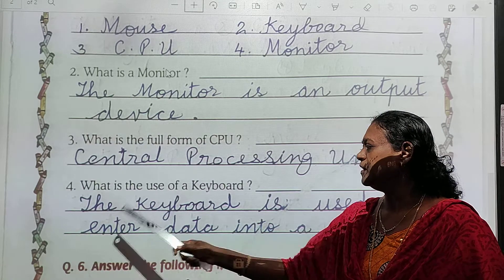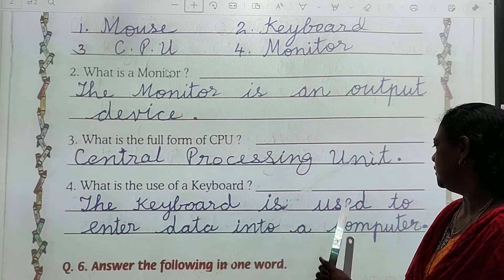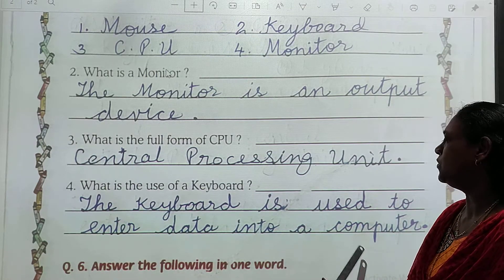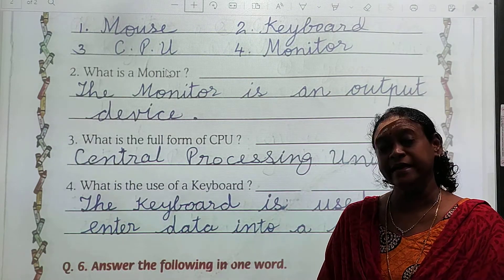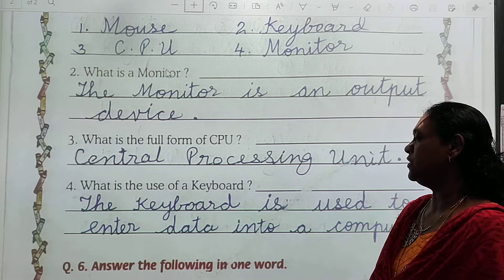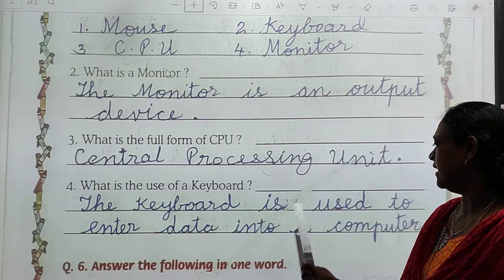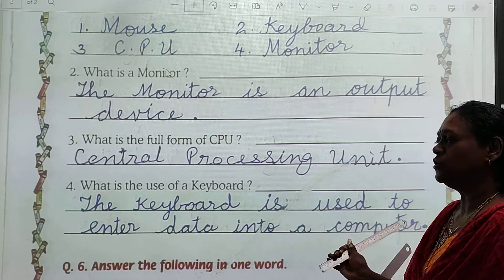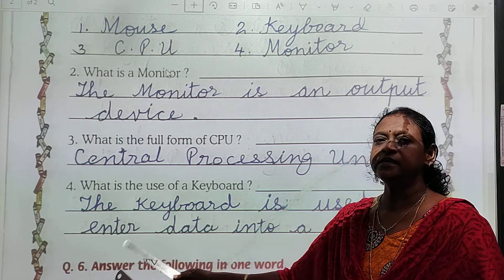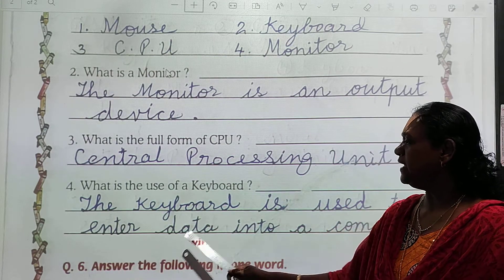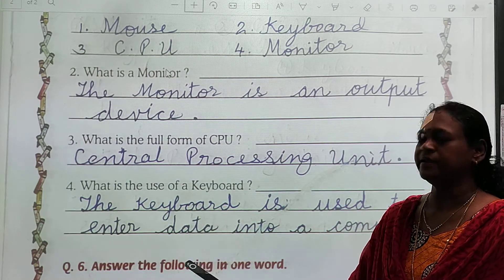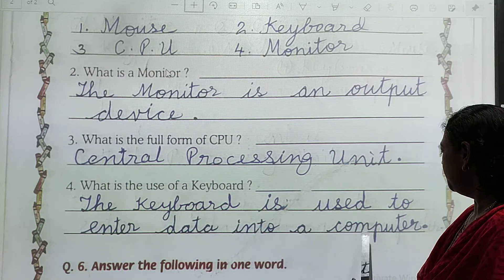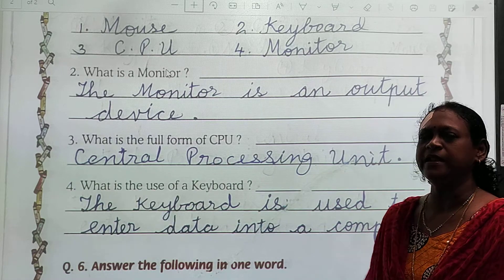Now what is the use of a keyboard? Keyboard ka kya use hai? The keyboard is used to enter data into a computer. Spelling: used — U-S-E-D, to — T-O, enter — E-N-T-E-R, data — D-A-T-A, into — I-N-T-O, a computer. Computer ki spelling bhi dekho.